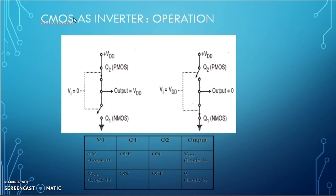Thus, CMOS can be used as an inverter and here MOSFETs are working as a switch. It is also called a digital NOT gate. Thank you.